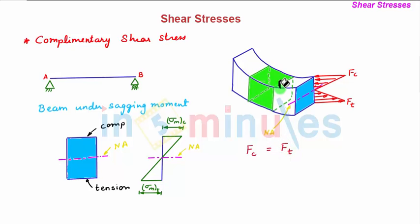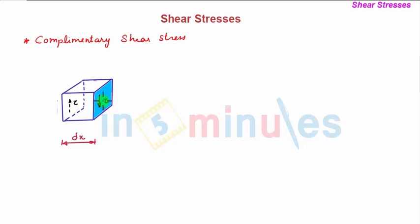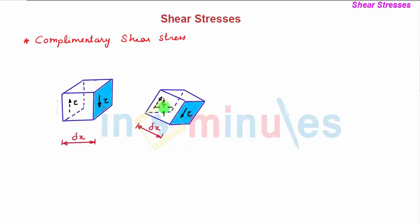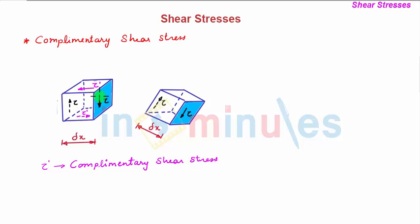Consider a small elemental part of the beam of length delta x, and let tau be the shear stress developed on the two cross-sections of this elemental part. The effect of shear stress on this part is to cause rotation of the beam. To prevent this rotation and satisfy static equilibrium, another stress tau dash develops on a horizontal plane adjacent to and parallel to the two vertical transverse planes. This is called the complementary shear stress, which balances the shear stress on the vertical section so that static equilibrium is attained.